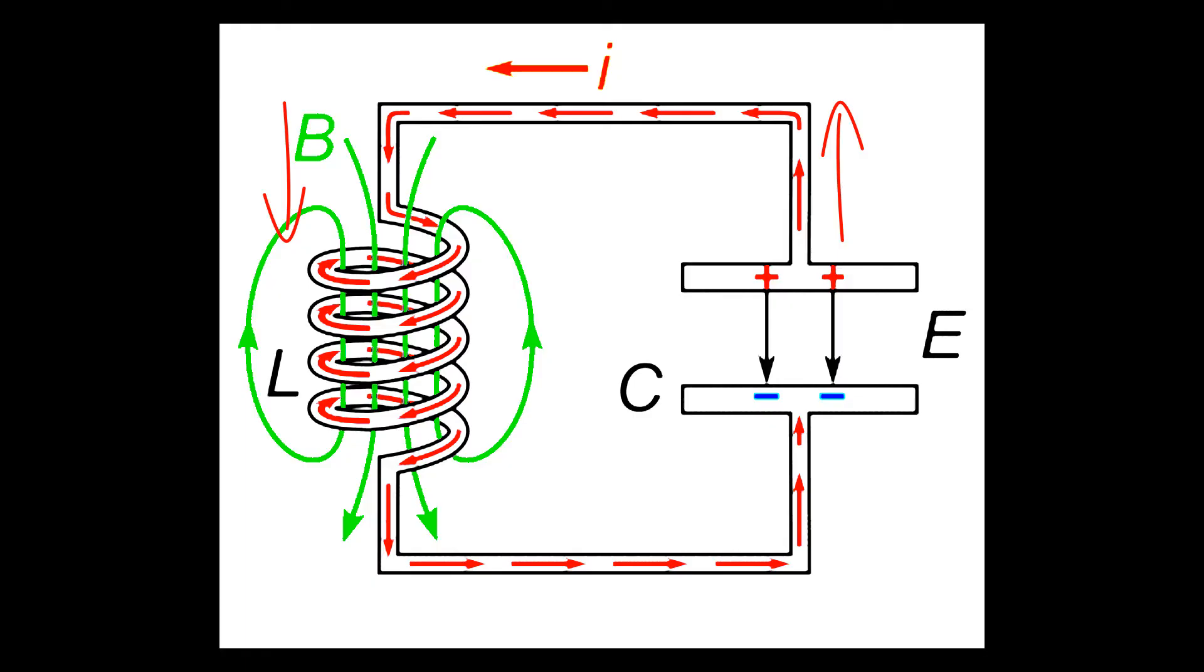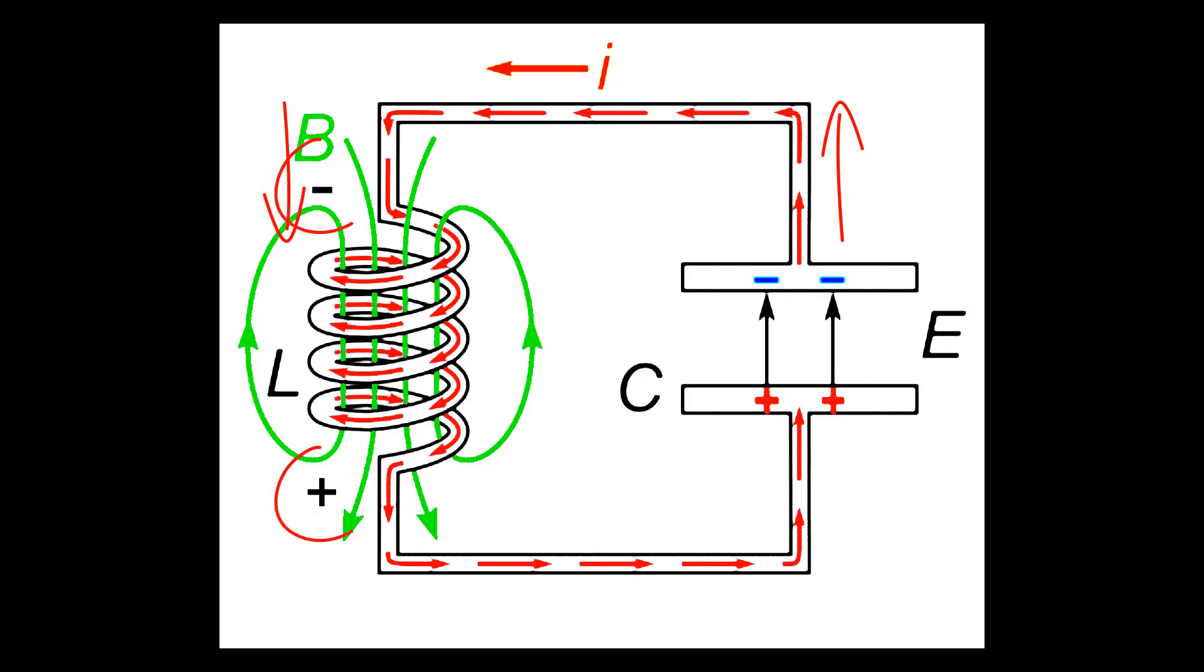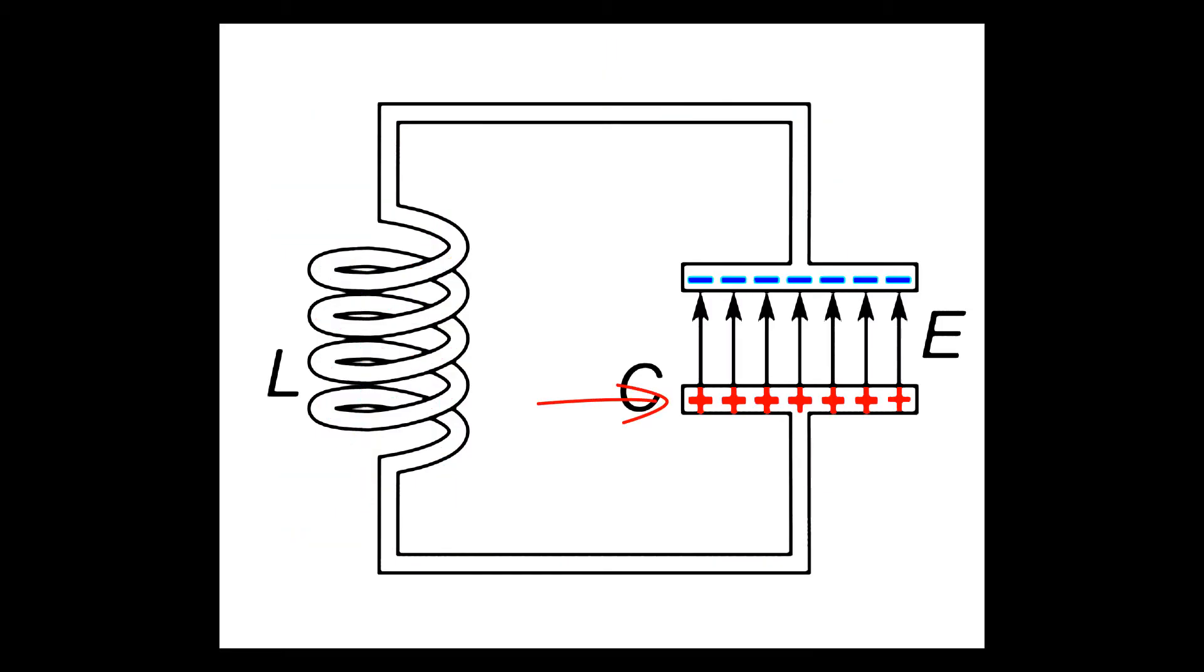Keep in mind that this animation is using conventional current flow as opposed to electron flow. As current flows through the inductor a magnetic field will build up as we saw before when demonstrating Ampere's law. Once the capacitor has fully discharged there will be no more electromotive force to maintain current flow and the magnetic field will start to collapse. The collapsing magnetic field will induce a voltage across the inductor in the opposite direction in an attempt to continue the flow of current in the direction it had been flowing previously. This will cause a buildup of charge across the capacitor in a polarity that was opposite to how it was charged previously.